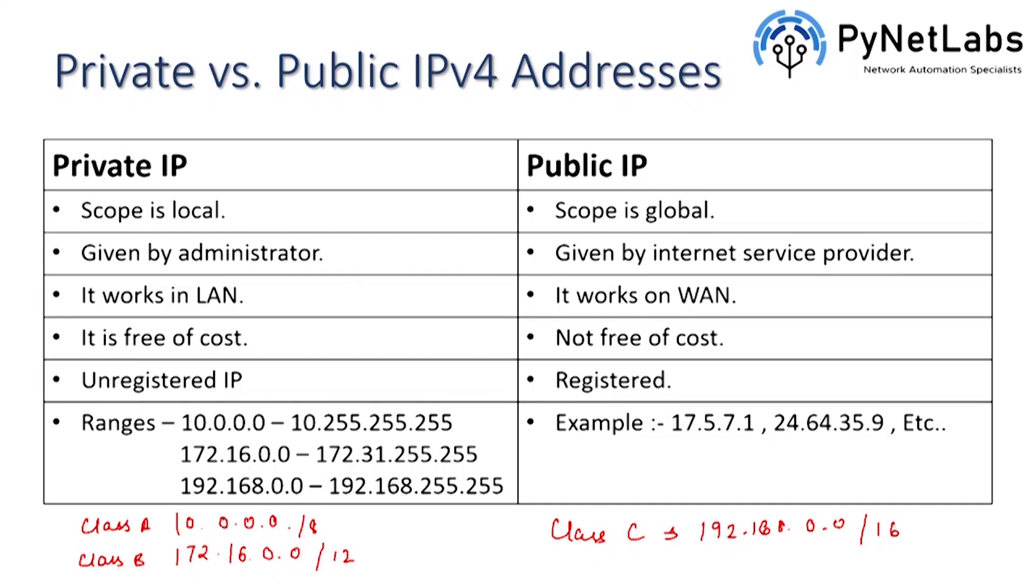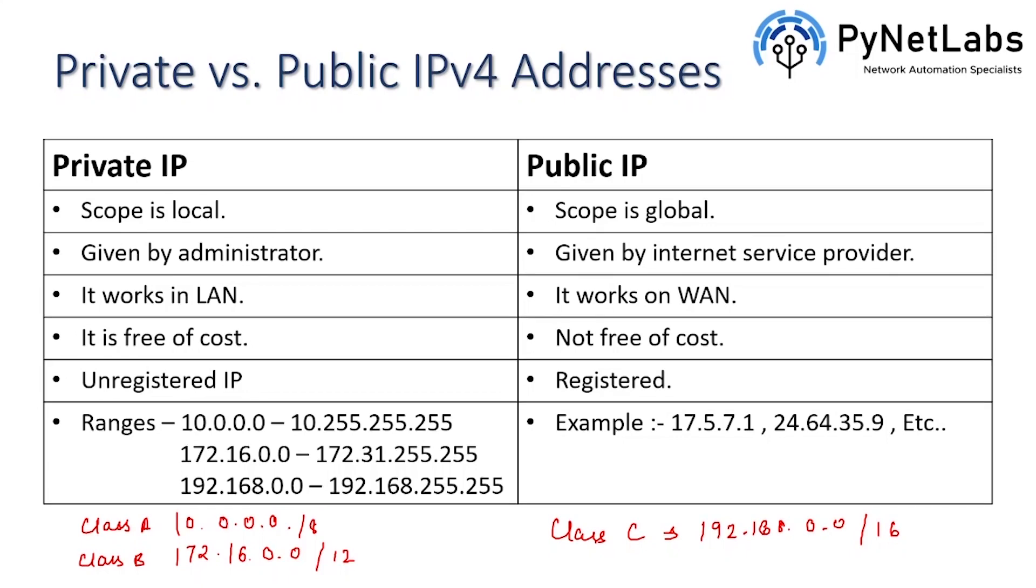Then public IP addresses are the rest of the addresses like you can see here 17.5.7.1, 24.64.35.9 and so on. So this is how public and private IP addresses are different from each other.